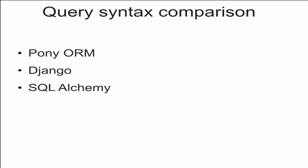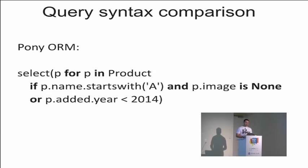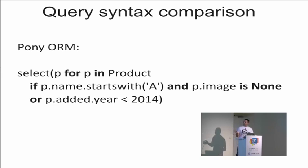Let's compare the Pony syntax with other mappers. Here's the query in Pony — we select products with multiple conditions: the product name starts with 'A', the product has no image, or instead of the previous two conditions, the product was added before 2014. In Pony we iterate over the product entity. We can use standard Python functions — for example, a name is a string so we can use the startswith function, and 'added' is a datetime attribute so we can use the year attribute.